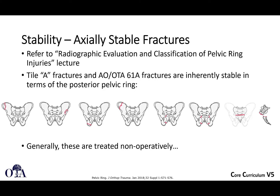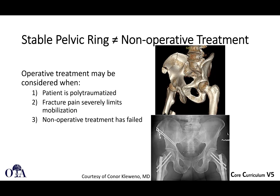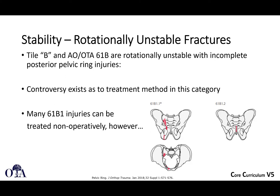Tile Type A fractures are rotationally and vertically stable — inherently stable in terms of the posterior pelvic ring — and are generally treated non-operatively. However, stability doesn't always equal non-operative treatment. A polytraumatized patient with a severe extra-articular iliac wing fracture, significant displacement, pain that severely limits mobilization, or failed non-operative treatment may require operative management.